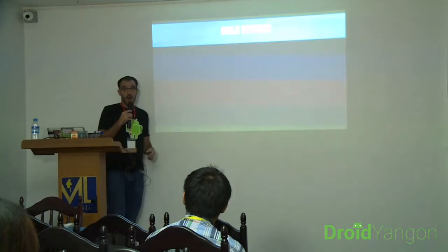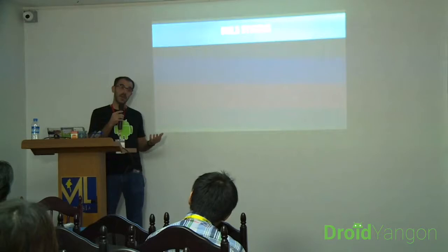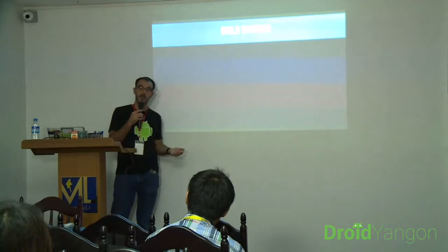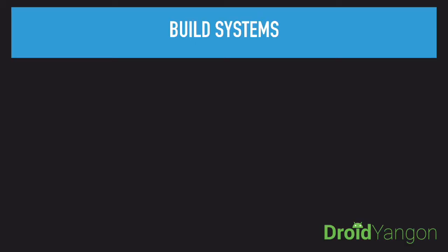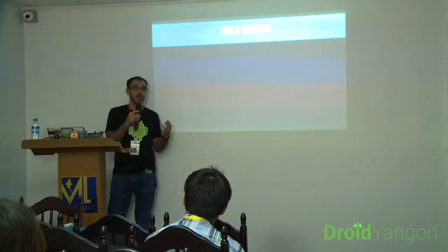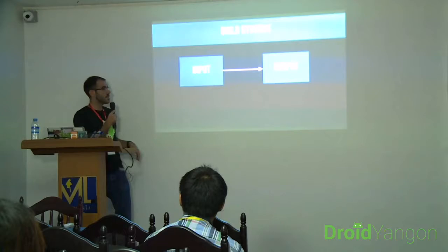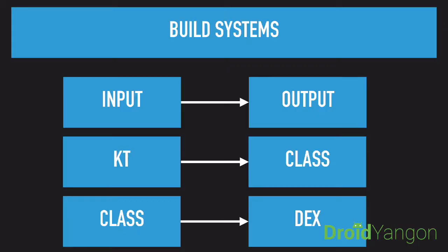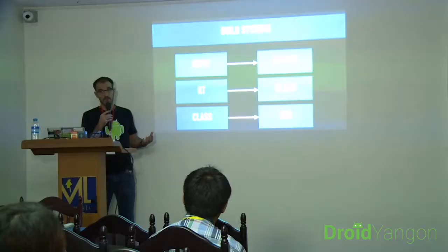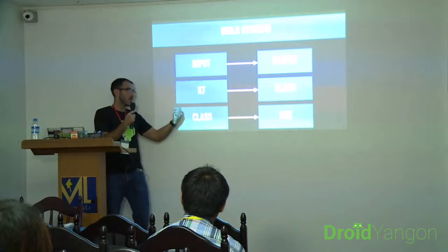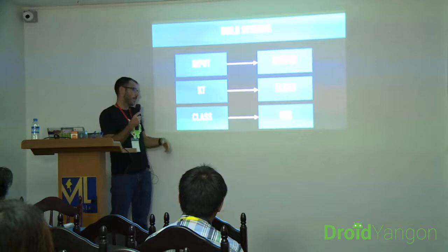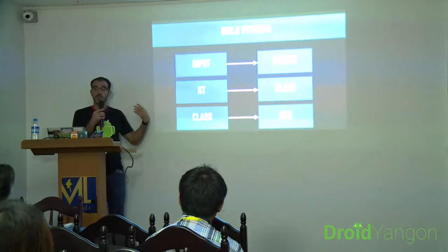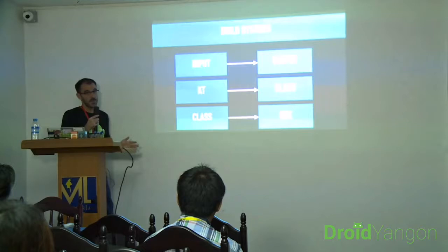Build systems have been present in software since forever. For example in C you have CMake, and they work with different architectures or languages — dynamic and static languages, dynamic and static dependencies. A build system is any activity that involves the transformation of one form of data (the input) into another form of data. In the context of Android development, your source Kotlin file is transformed by the build system into the output — the class bytecode. Another example: bytecode is transformed into the DEX format required by our APKs.